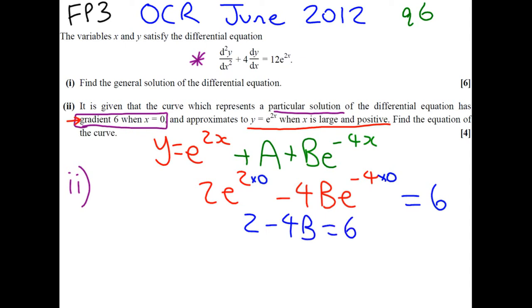And hence, B equals minus 1. So, we've found this unknown. B is minus 1.